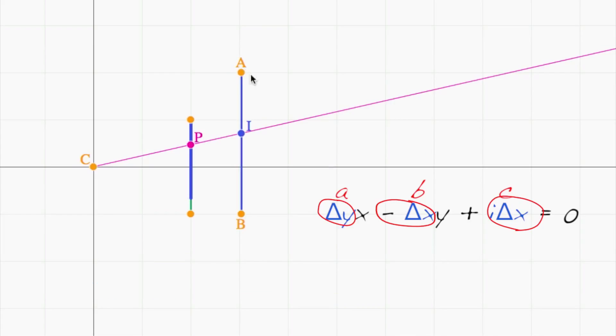Let's do an example for this specific line AB. Change in y is negative 3, change in x is 1, and i is 11. So, negative 3x minus y plus 11 equals zero. That line equation is shown here.